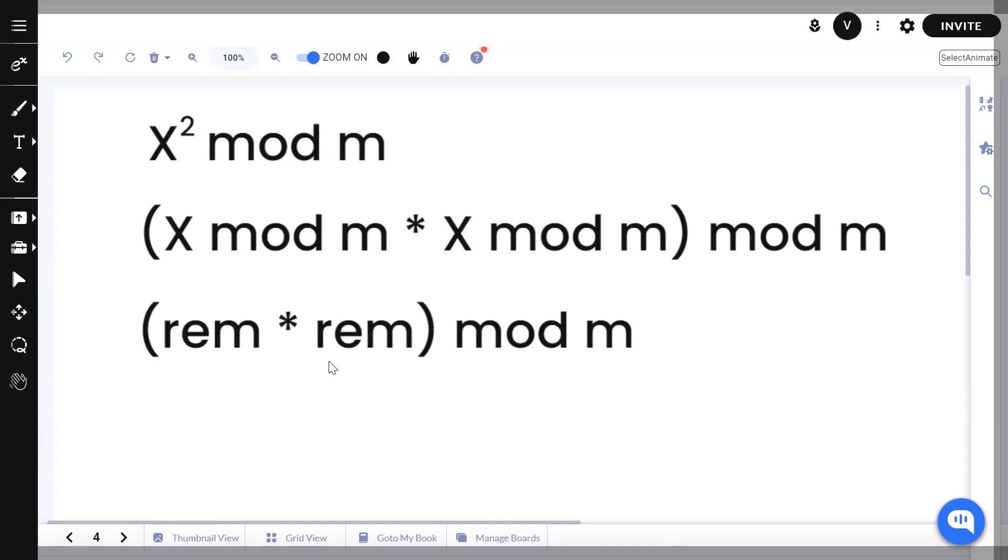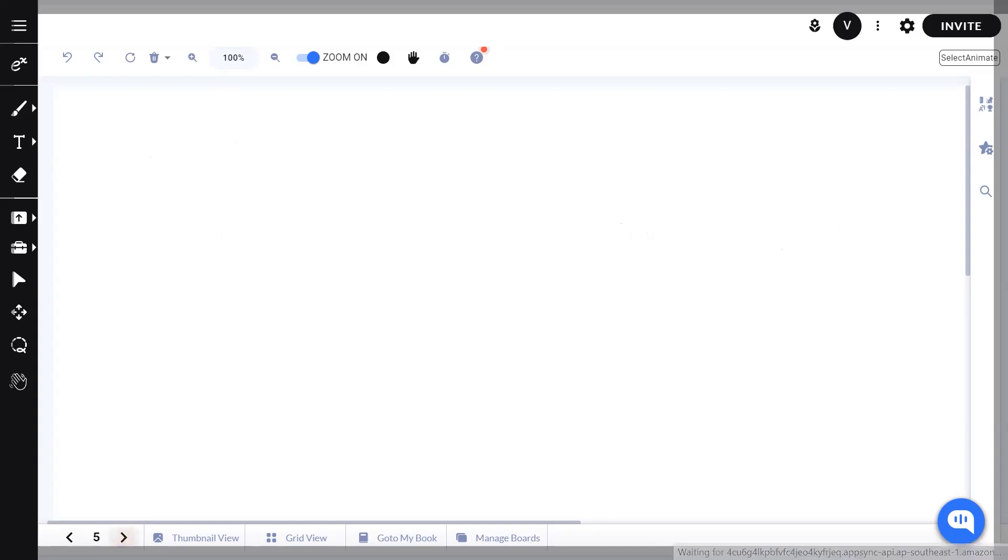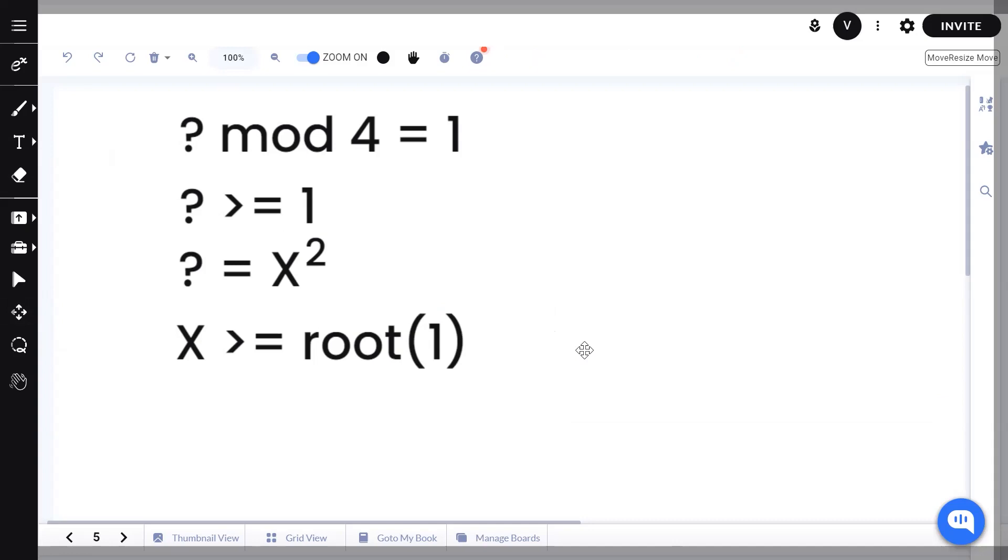We can however optimize it a bit more. We don't have to go all the way from 0 to M - 1. We can start a little later and end a little earlier. Suppose this was your question: question mark mod 4 equals 1. What's the minimum value of question mark? 1 is the minimum value of question mark, the minimum positive value. So question mark is greater than or equal to 1. Now if that question mark is equal to X square, which is what our question tells us, we have got to find X. So X is naturally going to be ≥ √1. So we do not have to start from 0. We can instead start from √N.